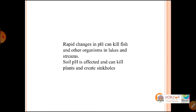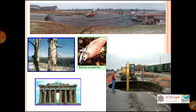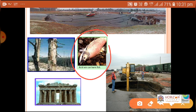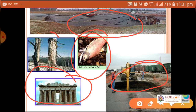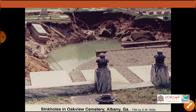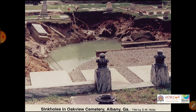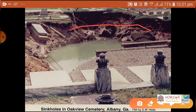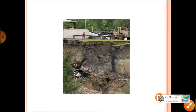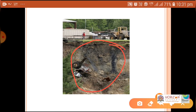Rapid changes in pH can kill fish and other organisms in lakes and streams. Soil pH is also affected, killing plants and creating sinkholes. Due to acid rain, fish have died, sinkholes are formed, cracks appear on land, monuments get damaged, trees get destroyed, and soil pollution occurs — the soil turns blackish in color due to acid rain.